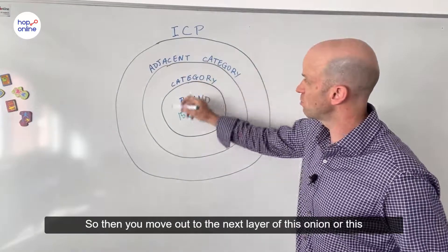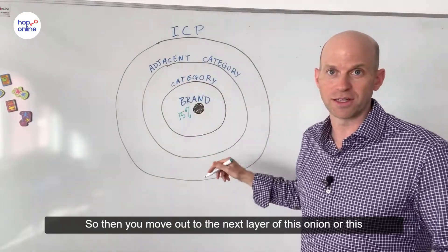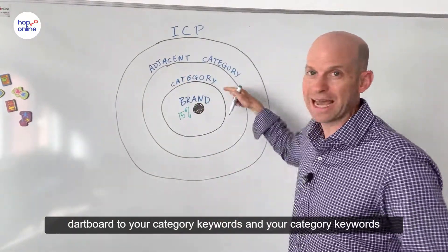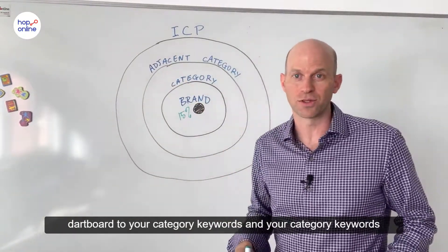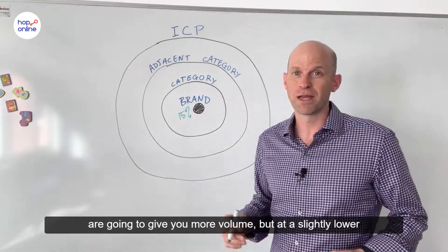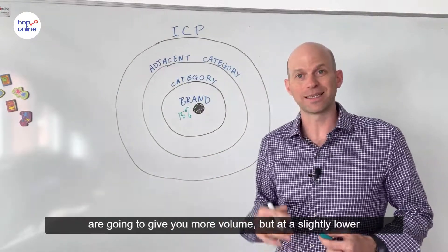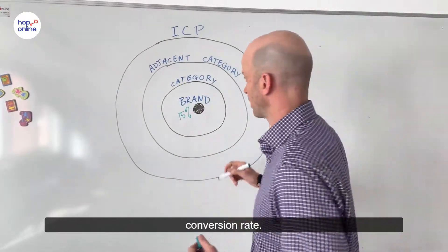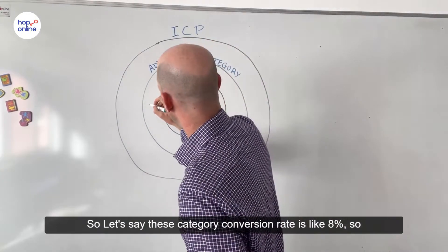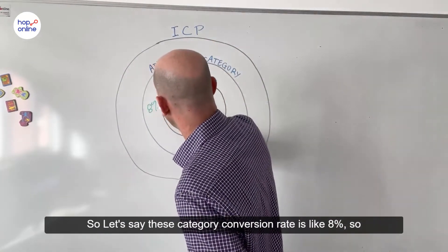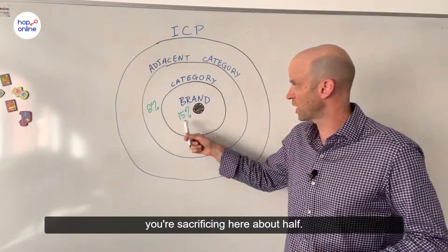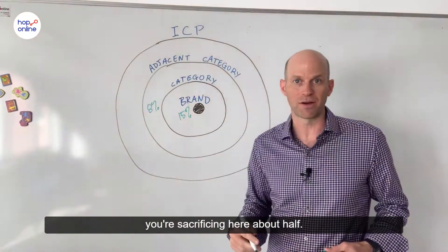So then you move out to the next layer of this onion or this dartboard to your category keywords. And your category keywords are going to give you more volume, but at a slightly lower conversion rate — so let's say the category conversion rate is like 8%. So you're sacrificing here about half.